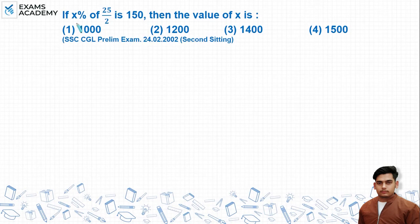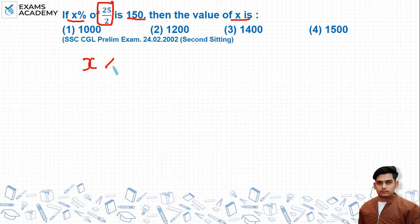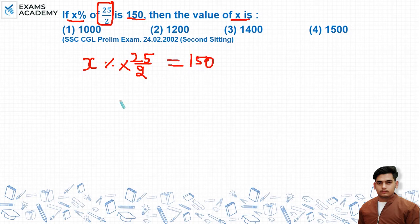The question is: x% of 25 by 2 is equal to 150. Find the value of x. This is what is given to us — x% of 25 by 2 is equal to 150. So let's solve this.